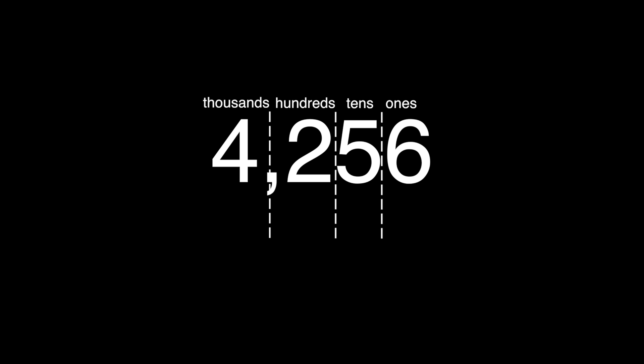The number 4,256 has four digits. The digit 6 is in the 1's column. It is worth 6. The 5 is in the 10's column. It is worth 5 tens, or 50.